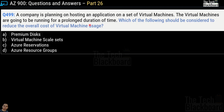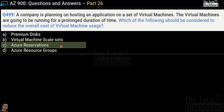Question number 499: a company is planning on hosting an application on a set of virtual machines running for a prolonged duration of time. Which of the following should be considered to reduce the overall cost of virtual machine usage? Options are premium disk, virtual machine skill sets, Azure reservation, or Azure resource groups. The correct answer is Azure reservations. If you know you'll use a virtual machine for one year or three years, it is advisable to reserve it in advance, which also gives you significant discounts from Microsoft.